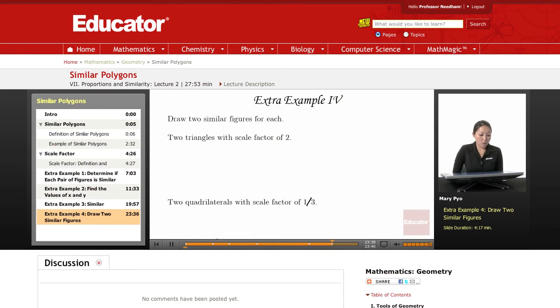Example 4. Draw two similar figures for each. So they're giving us the scale factor, and then we have to just draw whatever you want. So your diagram is probably not going to look like mine, but it doesn't matter. As long as you draw two triangles with a scale factor of 2.